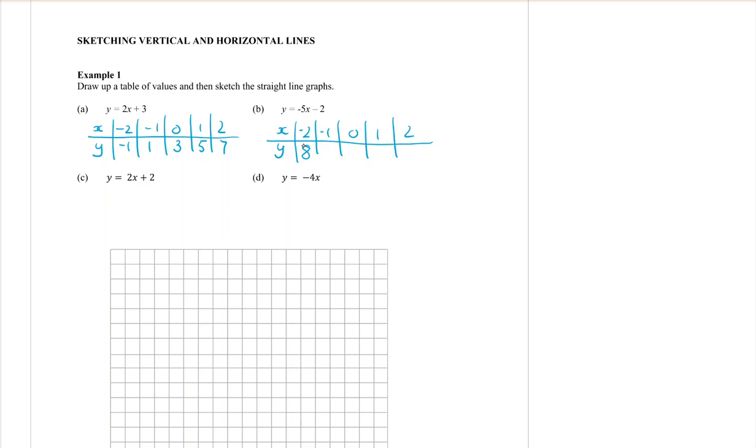Fill in the rest. Sub in minus 5 times minus 1, minus 2. What do we get? 3. Okay. Then 0, you're going to get? Negative 2, correct.